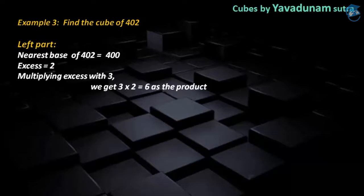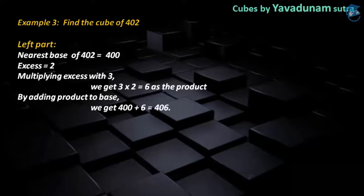After finding the product, moving to step number 4, we have to add the product to the base. Therefore, by adding 400 + 6, we get 406. And this is the required left part.